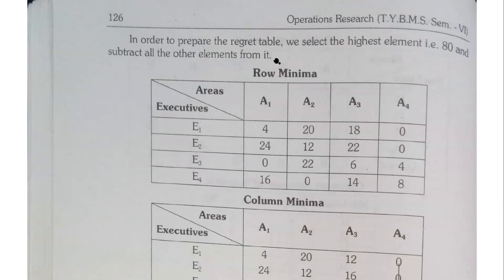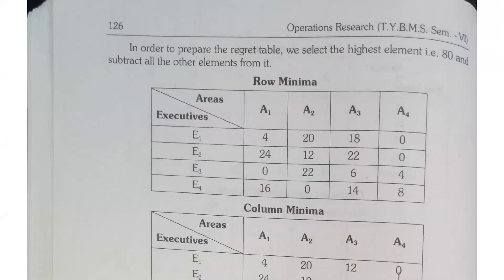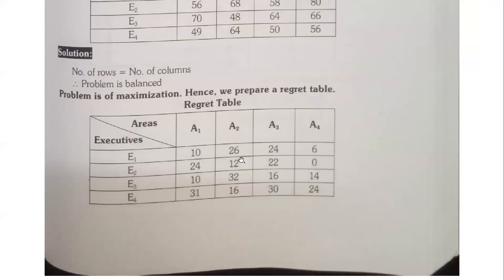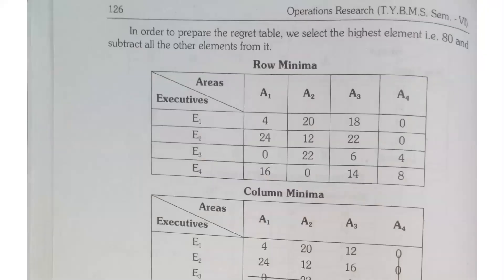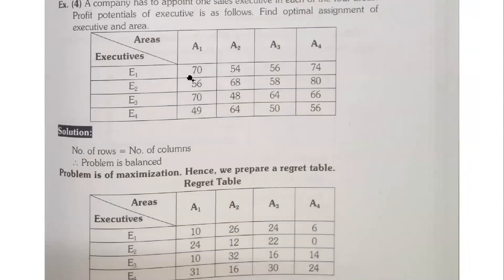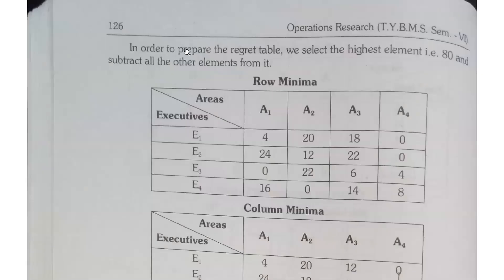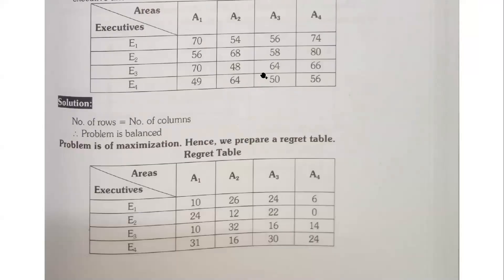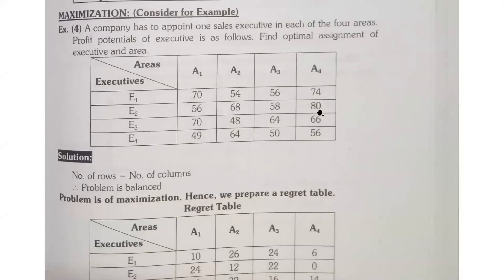In order to prepare the regret table, we select the highest element that is 80 and subtract all the elements from it. Now we are not talking about rows or columns, what is the highest number in the whole table? 80. So what do we do with 80? We minus all tables. First of all, we will take 80 and then we will do row minimization. After that, we will do column minimization.